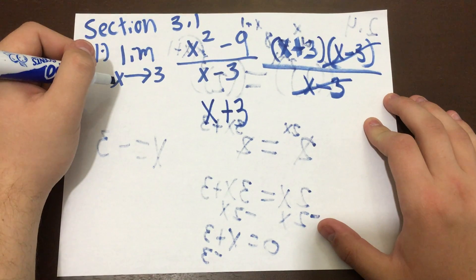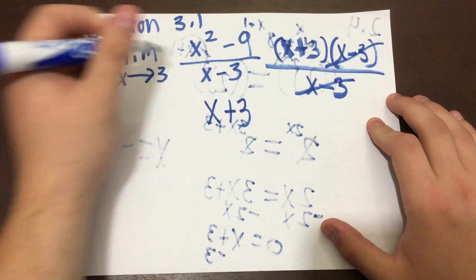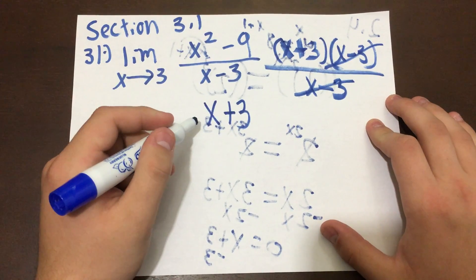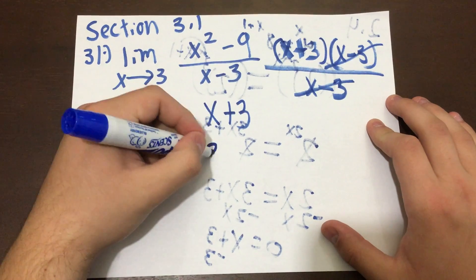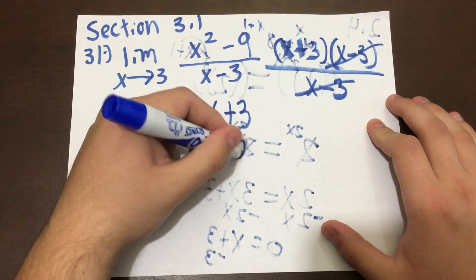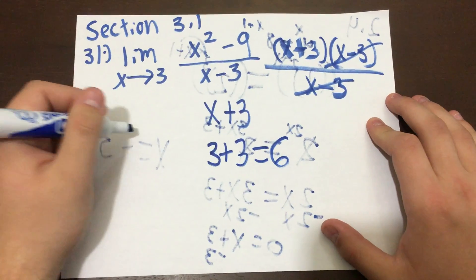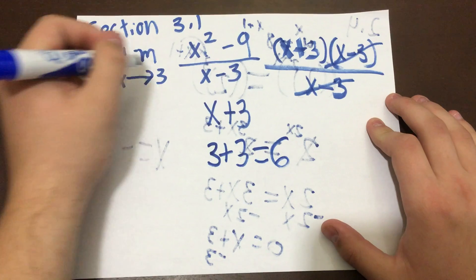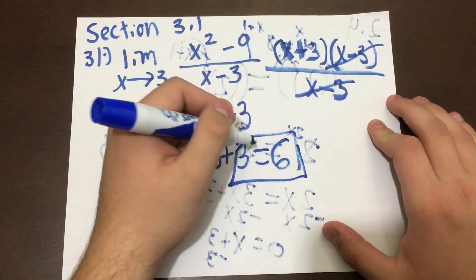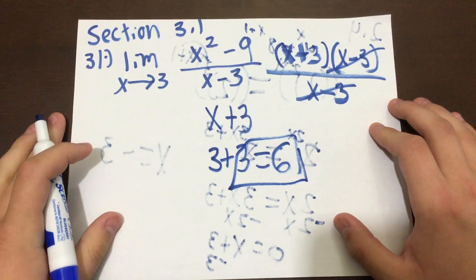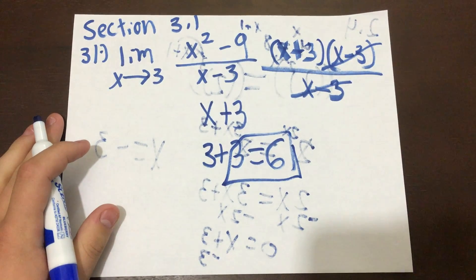So we want to see what happens when x is approaching 3. We're going to substitute x for 3, so it's going to be 3 plus 3 equals 6. So as x approaches 3, the limit becomes 6 right here. And that's how you're going to solve this question.